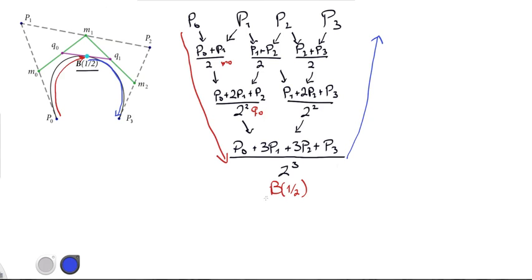And then in blue, we're starting from B of 1 half, and then we're going up to Q1, and then up to M2, and then up to P3. So the idea is that this sort of way of building up this pyramid is going to work for any Bézier curve.